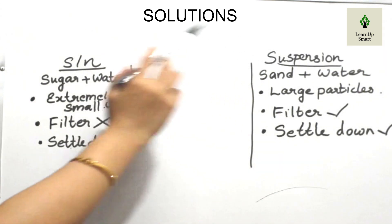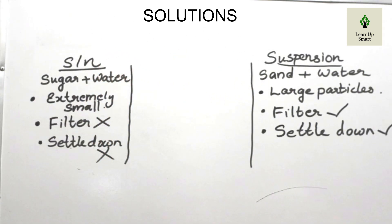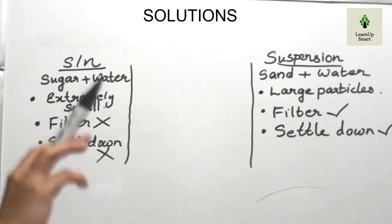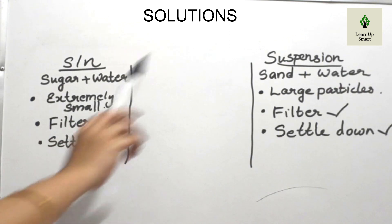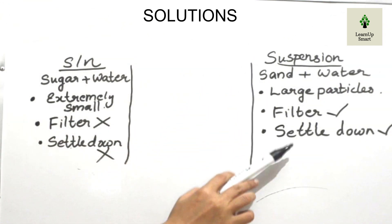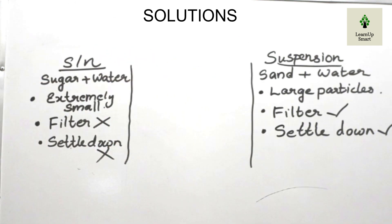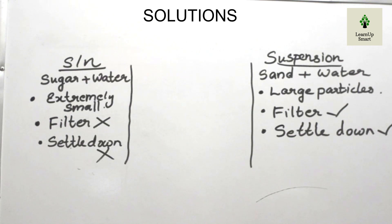This mixture is called a suspension. There are three types: True Solution, Colloid, and Suspension. Suspension is one of the three. In a suspension, the particles are large and settle at the bottom.